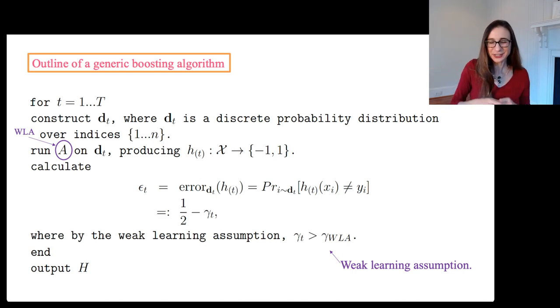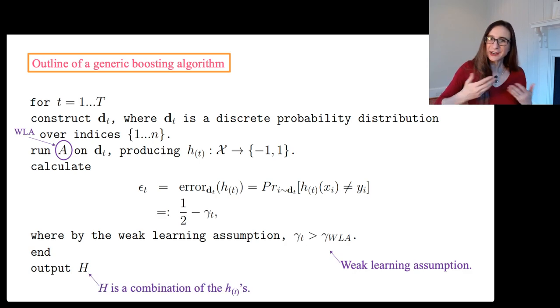The weak learning algorithm says you're going to be at least this much better than random guessing. Combine all the classifiers together at the end and output the final combined classifier capital H. And H is going to be a combination of the weak classifiers that you got all along the algorithm.